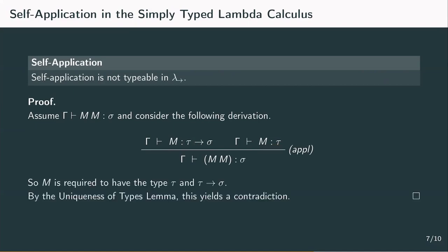This means that M has type tau to sigma and type tau at the same time, but this is a contradiction to the uniqueness of types lemma. Therefore, there can't be a type for a self-application and any term containing such a construct wouldn't be legal.